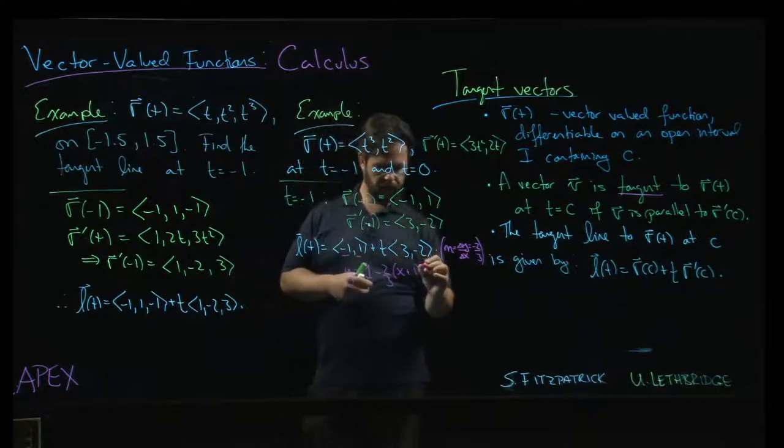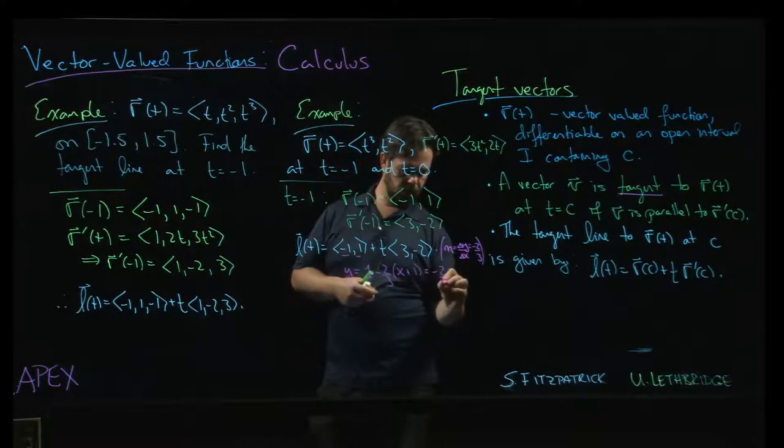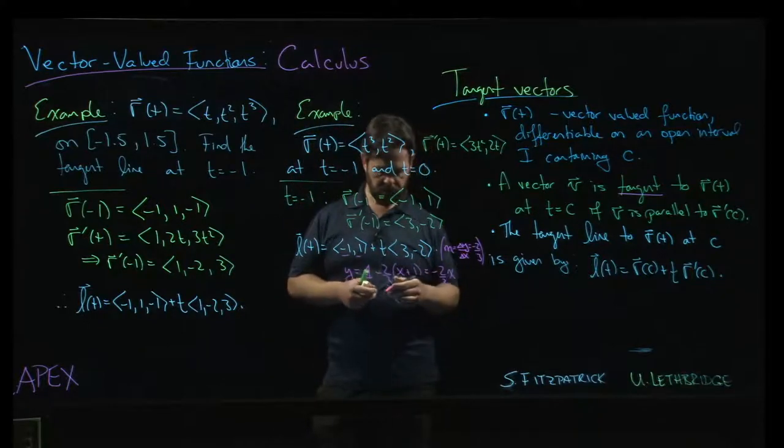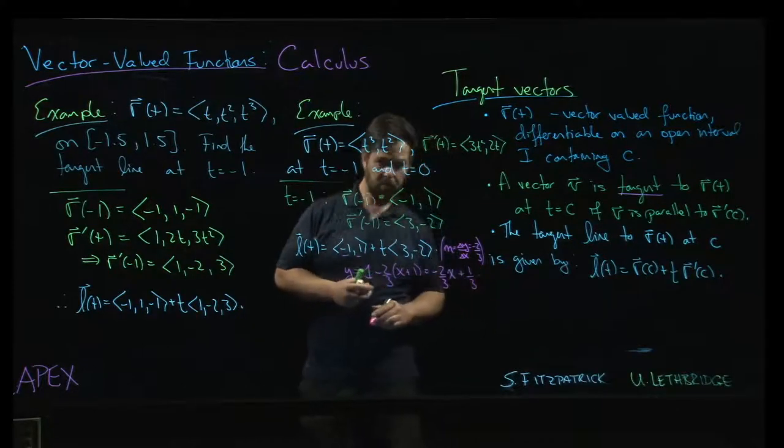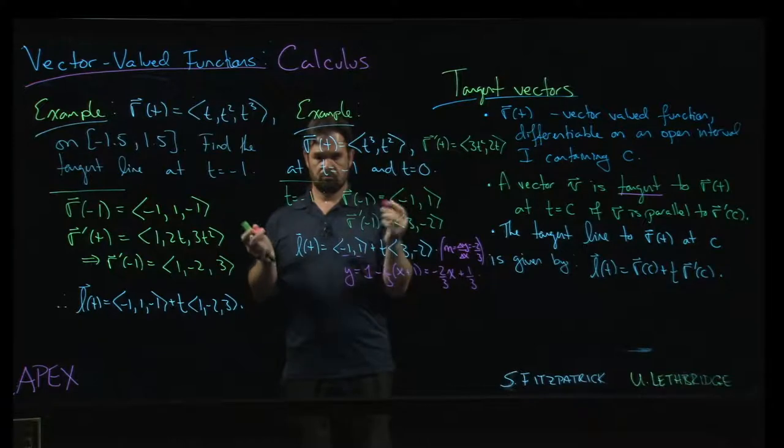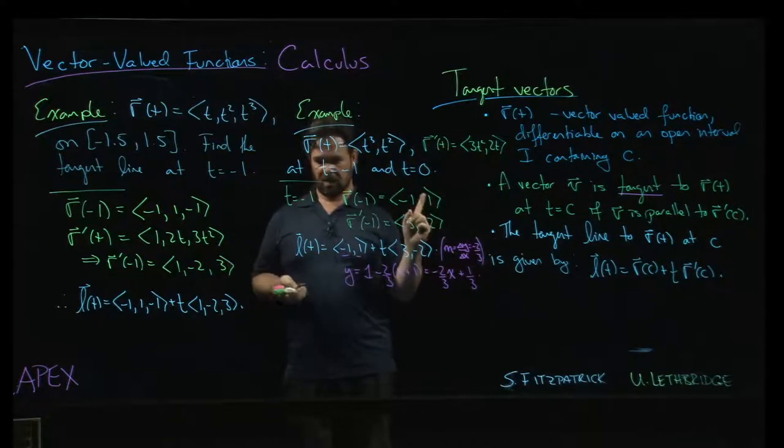So minus 2 thirds x if you want the sort of, you know, slope intercept form. There you go. Okay. So we've got the equation of the tangent line at t equals minus 1.